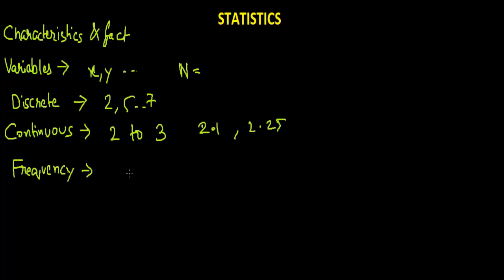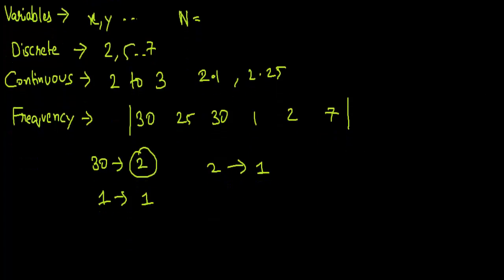Now there is a definition called frequency. The number of occurrence of an observation or data of variable is called frequency. Suppose there is something like this: 30, 25, 30, 1, 2, 7. The frequency of 30 will be two times because it has occurred two times. Frequency of 1 will be 1, frequency of 2 will be 1.